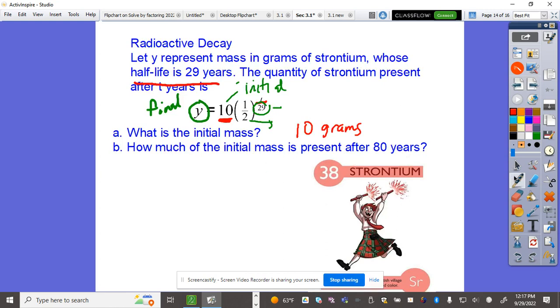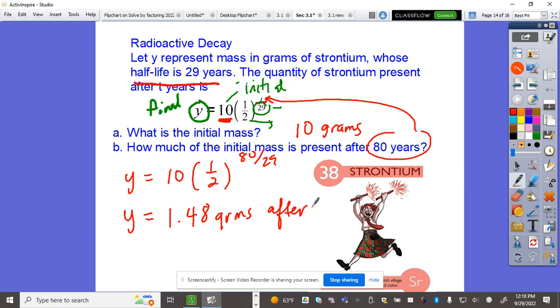How much of the initial mass is present after 80 years? Plug in 80 for T: Y = 10(1/2)^(80/29). In the calculator, 0.5 raised to (80/29) times 10. After 80 years, it becomes 1.48 grams.